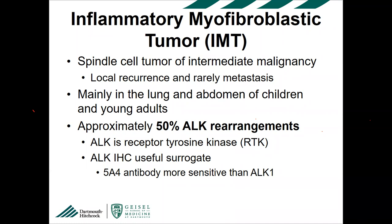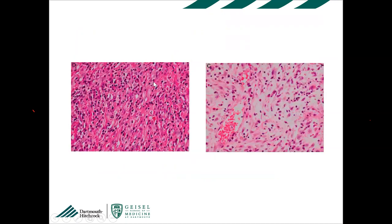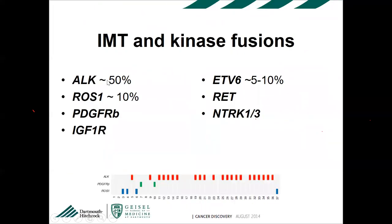Inflammatory myofibroblastic tumor (IMT) also shows ALK rearrangements. This is a tumor of intermediate malignancy — high local recurrence rate, metastasis in less than 5% — mainly occurring in the lung and abdomen of children and young adults, though it can happen anywhere. About 50% have ALK rearrangements; 5A4 and D5F3 clones are more sensitive than ALK1. I've seen quite a few IMTs negative for ALK1 and positive for D5F3. The classic morphology is a spindle myofibroblastic neoplasm in a myxoid background with lymphoplasmacytic inflammation.